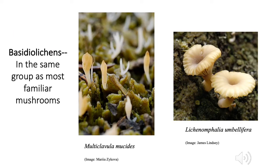The last growth form is a real outlier: basidiolichens, which are in a whole different taxonomic group — the group we mostly think of as mushrooms. Like mushrooms, they have fruiting bodies that just look like mushrooms. These are fairly rare, but they're pretty cool.